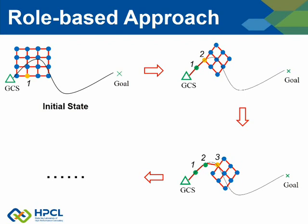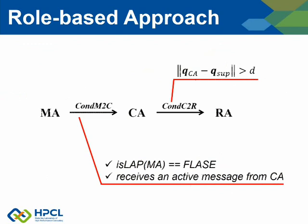Based on the role approach, the procedure of the swarm behavior may be like this. Initially, one agent is selected to be the CA, maybe Agent 1, and it supervises the link with GCS. When Agent 1 is going to move out of the sensor range of GCS, it switches to a relay. At the same time, Agent 2 transforms its role from MA to CA and supervises Agent 1. Then Agent 2 will become a RA when it is about to move out of the range of Agent 1, and another agent will become the new CA, and so forth.